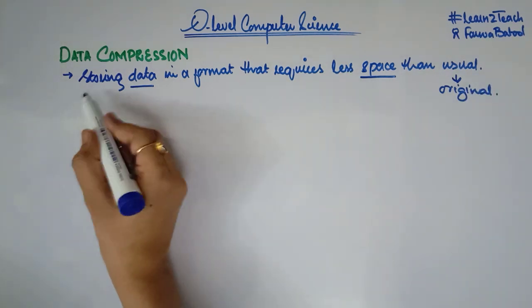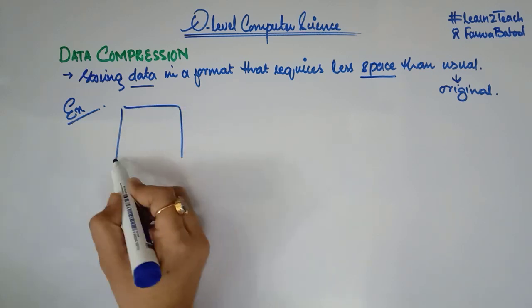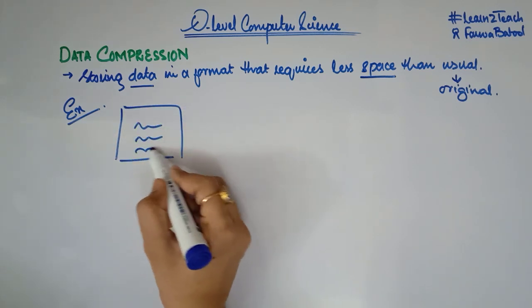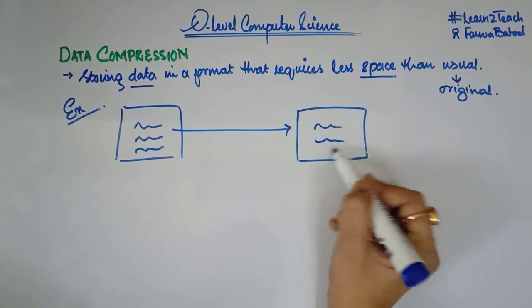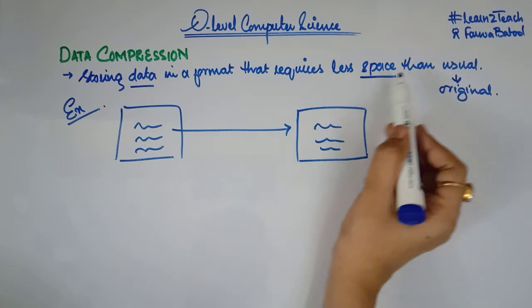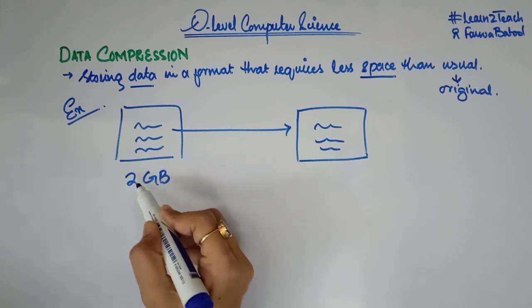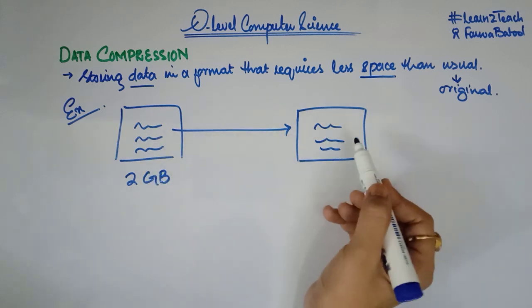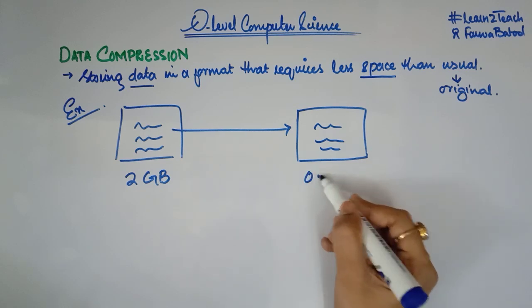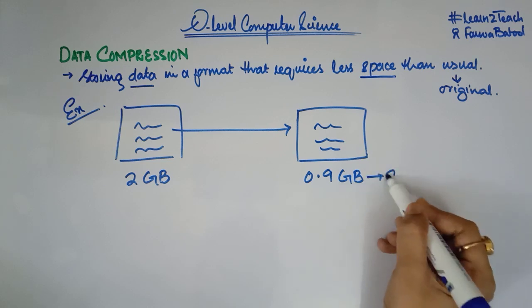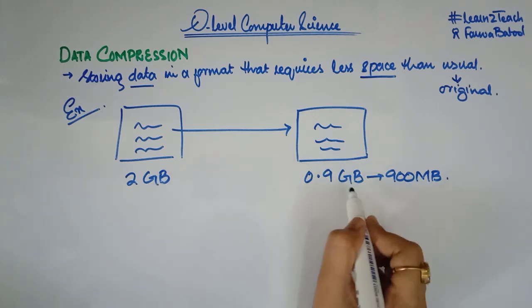Let's take an example to understand the concept. Let's suppose I have a text file and I want to compress this file. Compression means that you are reducing the file size. For example, the original file is having 2 GB of data, and after compression the file size has been reduced to 0.9 GB, or in other words, 900 MB.